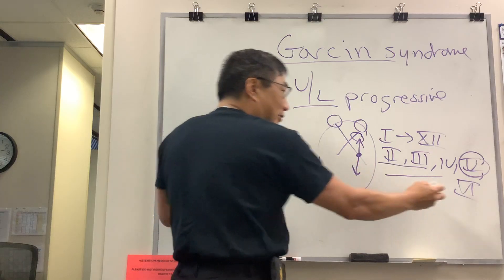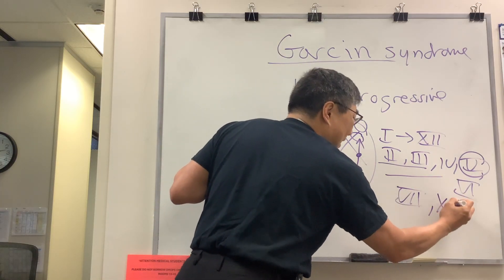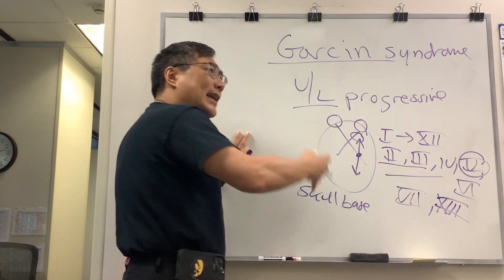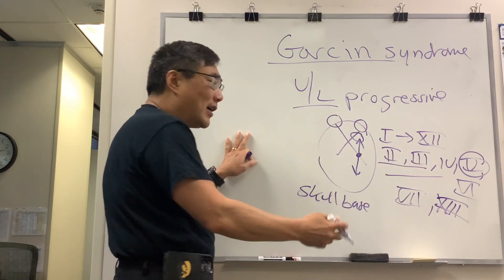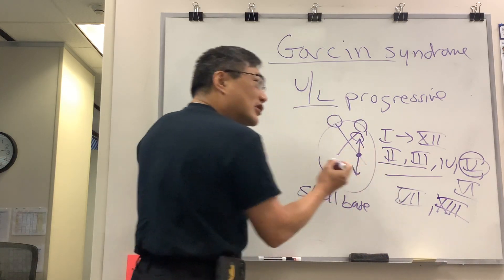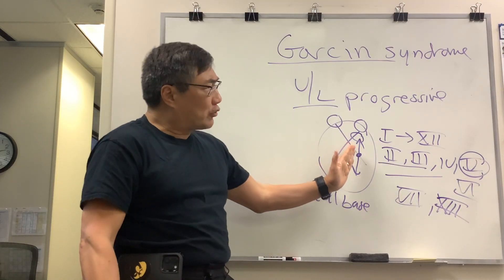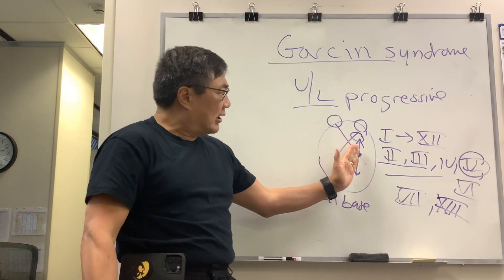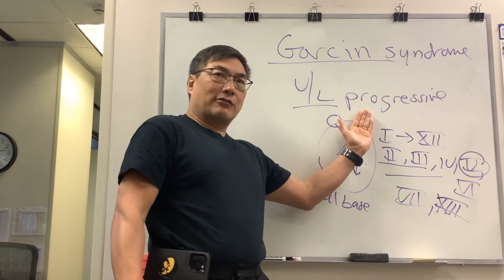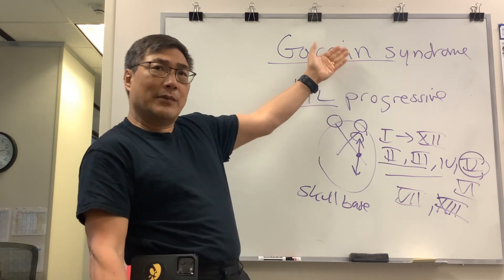And if it goes posteriorly, then you're talking about seven, eight, nine, ten, and twelve. So it's just a slowly progressive process that's creeping along the skull base, slowly taking up ipsilateral cranial nerves — and that is what Garson described: Garson syndrome.